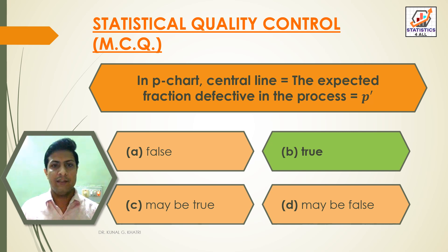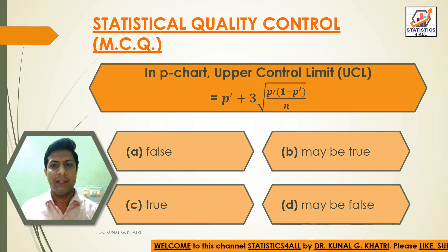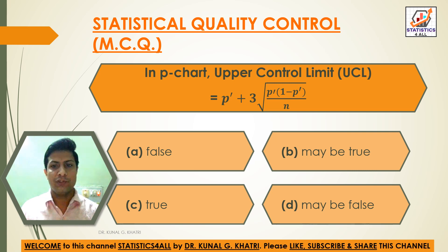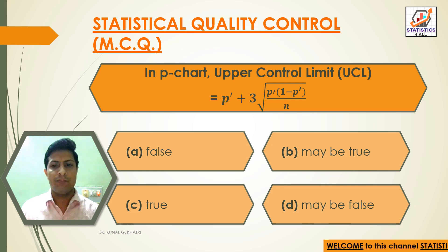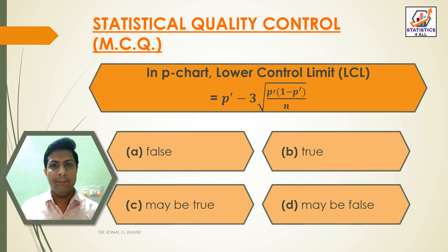Question 10: In P chart, the upper control limit (UCL) is equal to P-dash plus 3 × √(P-dash × (1 − P-dash) / n). Option A: False, Option B: Maybe true, Option C: True, Option D: Maybe false. Answer: Option C — True. UCL = P-dash + 3 × √(P-dash × (1 − P-dash) / n).